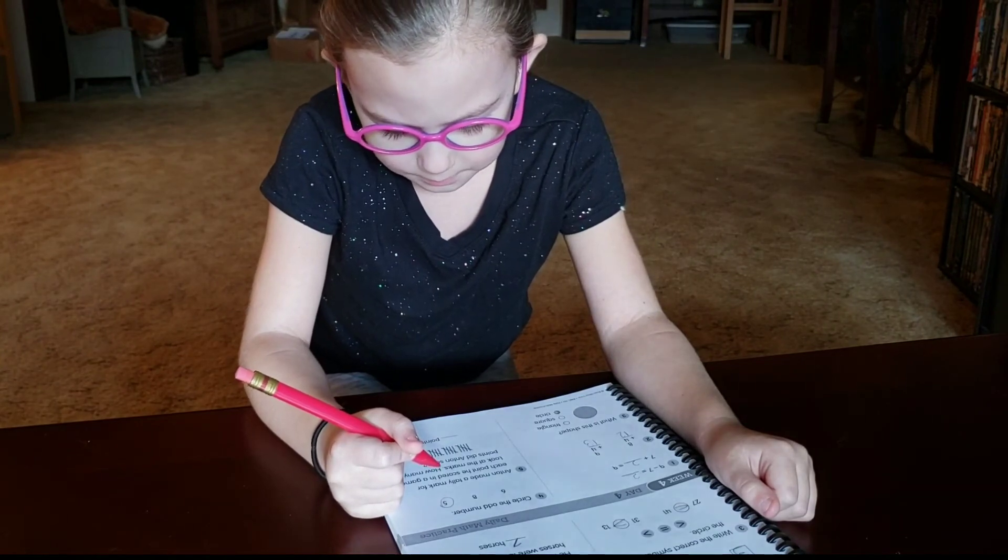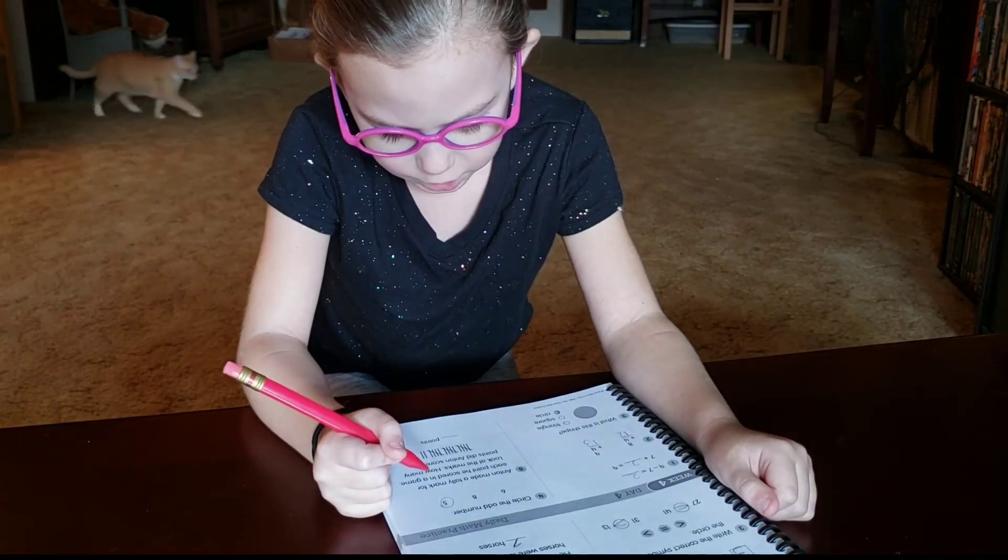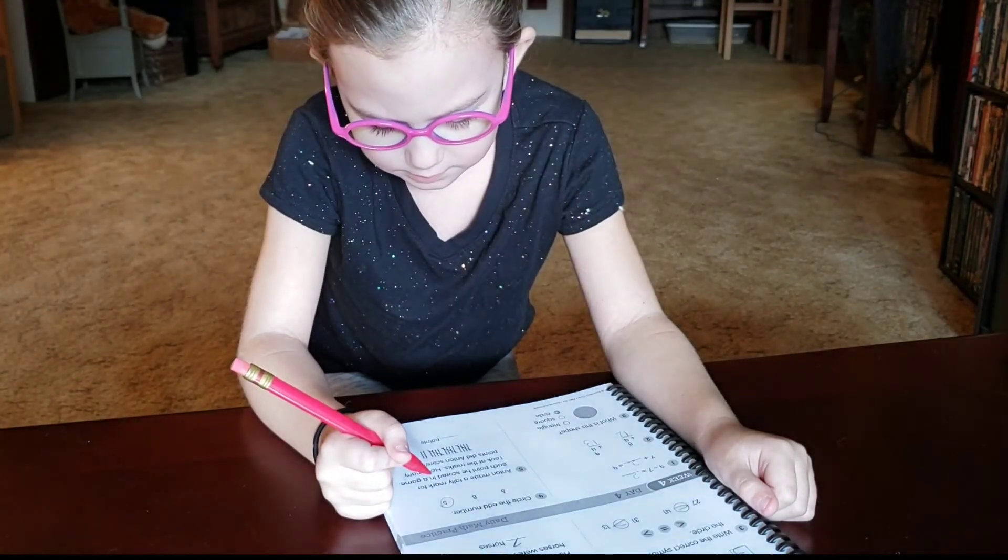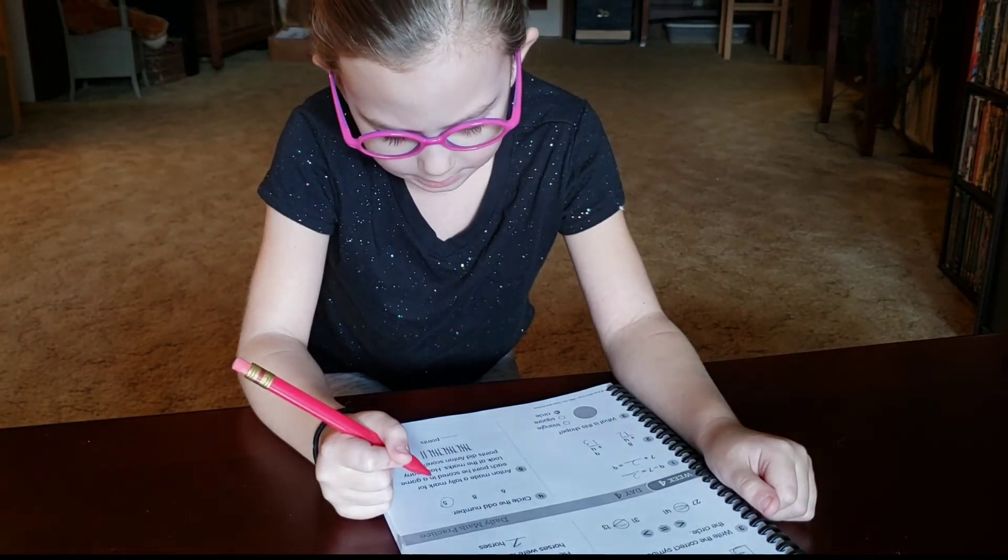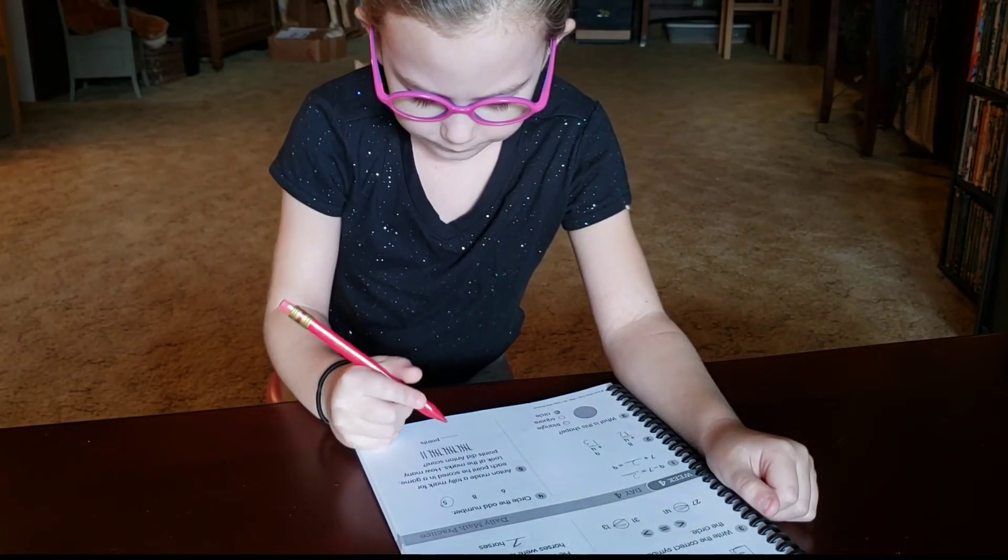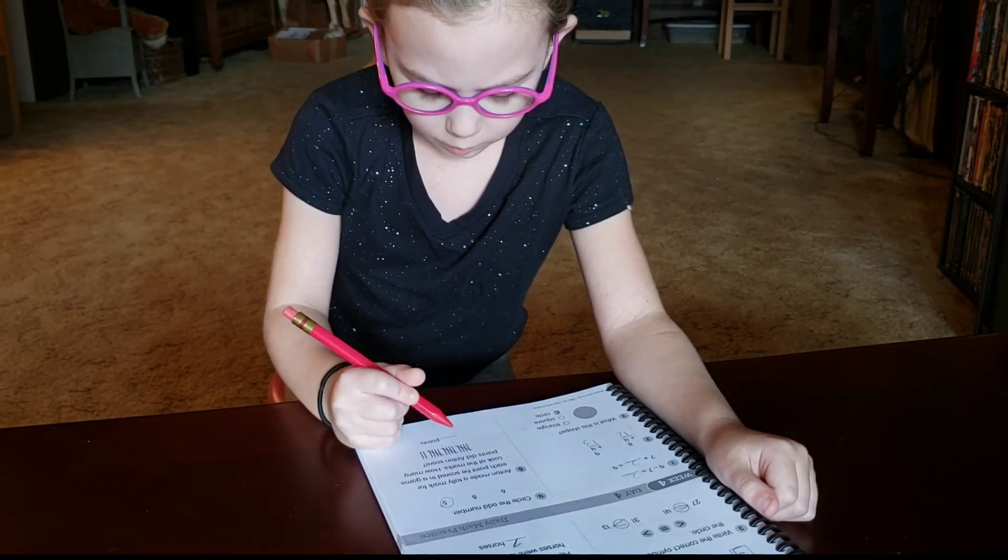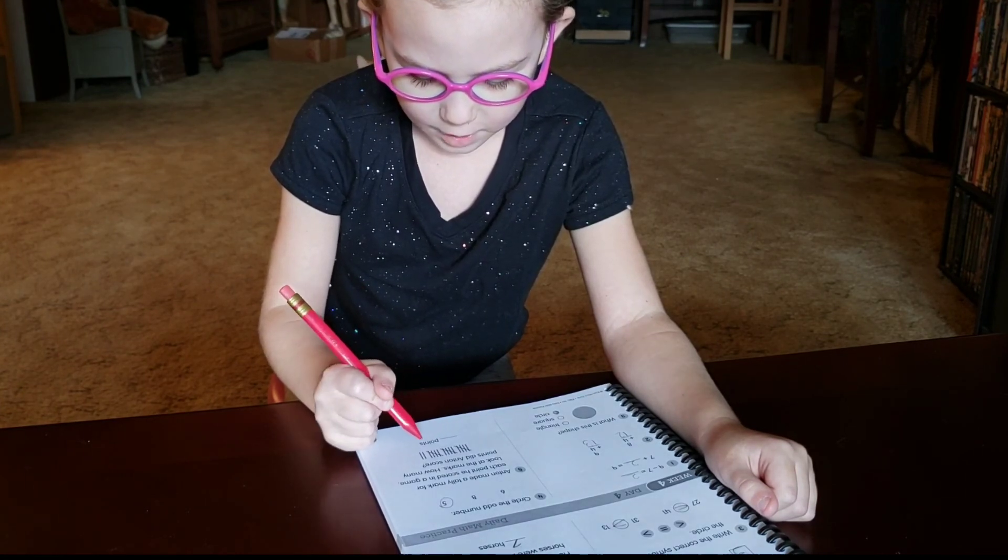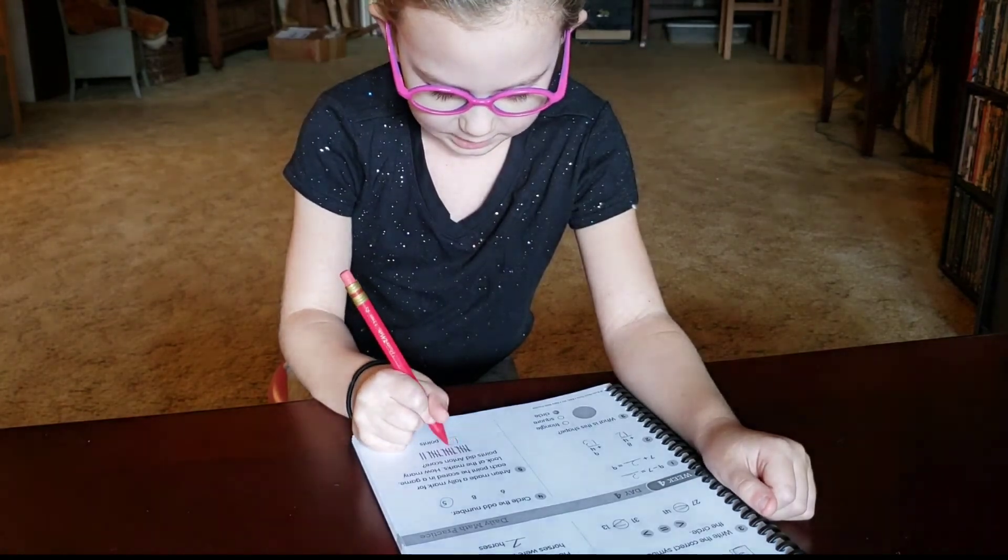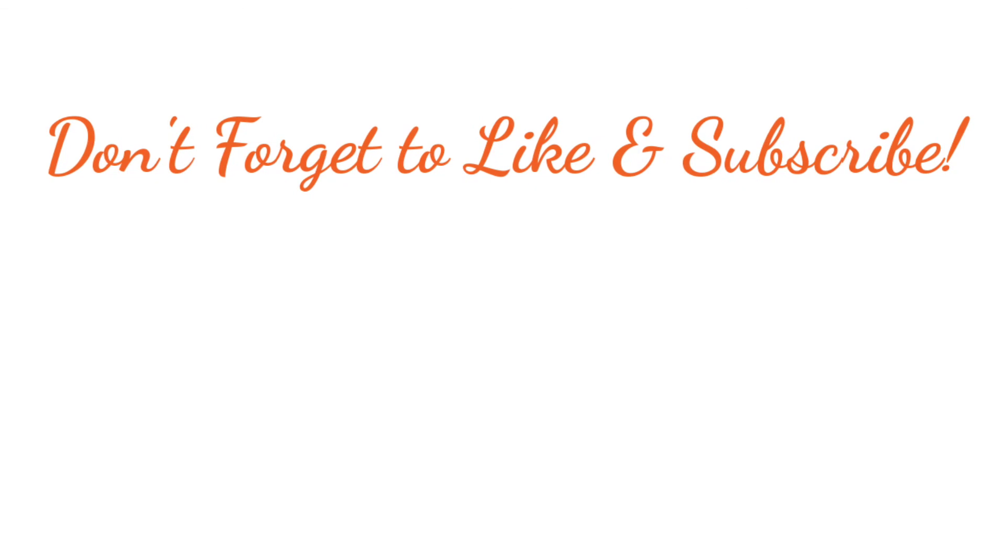Anton made a tally mark for each point he scored in a game. Look at the marks. How many points did Einstein score? So 5 plus 5 equals 10, and 5 plus 2 equals 7. So 10 plus 7 equals 17. 1496, 1596, 1594, 1595, 1696.